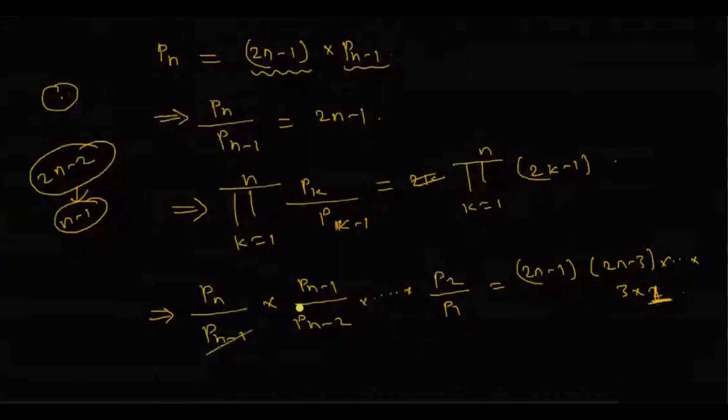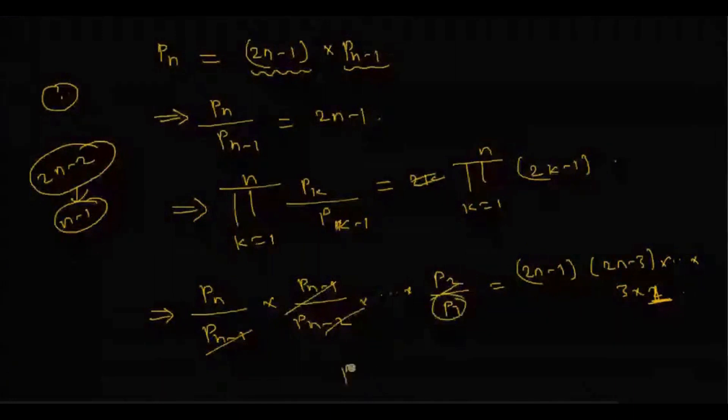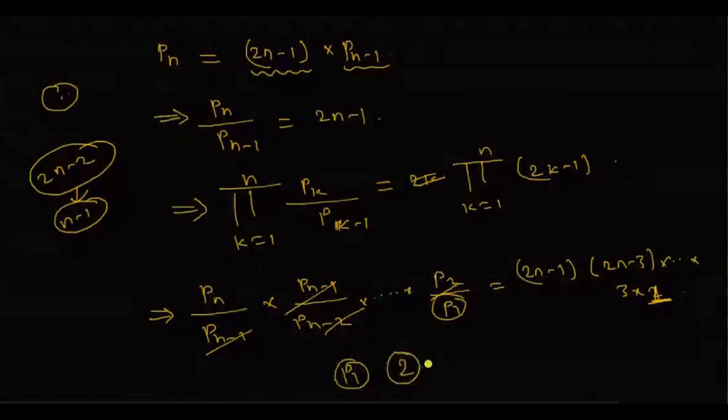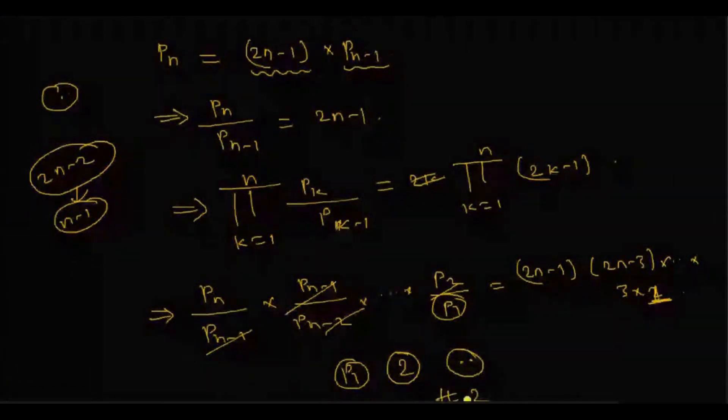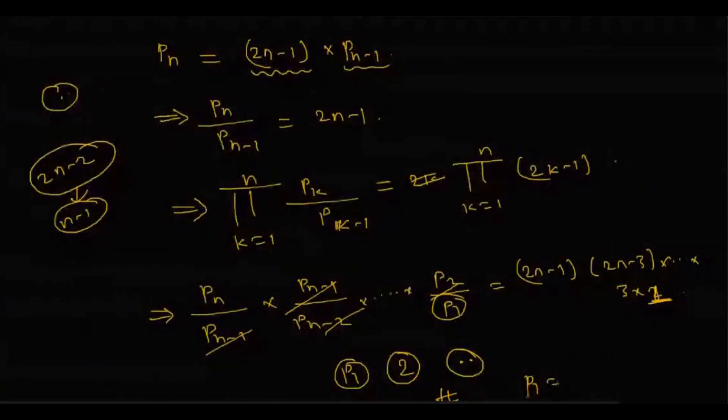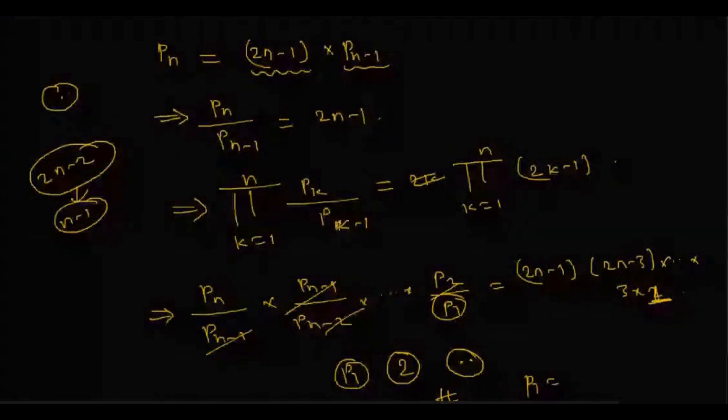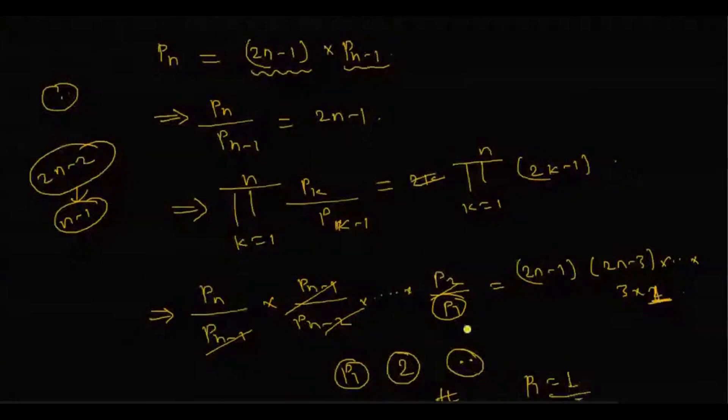Now P1, what is P1? P1 is the number of pairings when there are 2 times 1, two participants, from which exactly one pairing should be formed such that the pair contains exactly two players. So the number of such things is one. There are two persons and exactly one group is to be formed. So P1 is equal to 1.